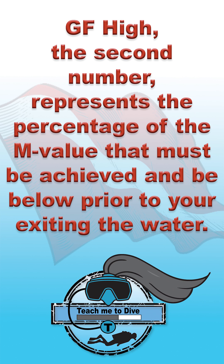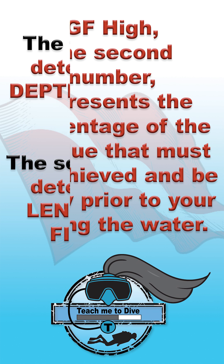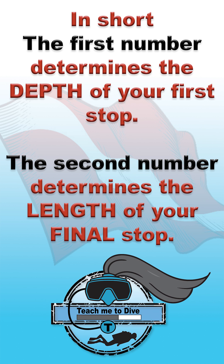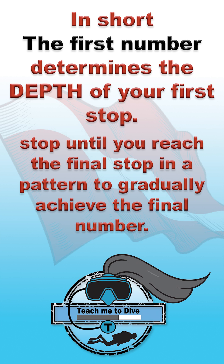GF high, the second number, represents the percentage of the M value that must be achieved and be below prior to your exiting the water. In short, the first number determines the depth of your first stop, and the second number determines the length of your final stop.